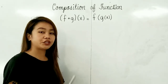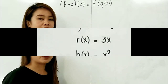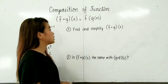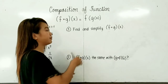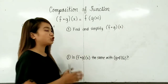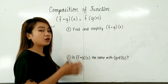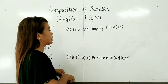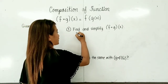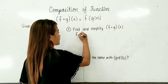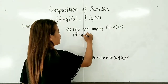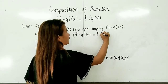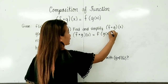Let's have examples for you to understand better. Question number one: find and simplify f composed of g of x. To solve for the composite function of f composed of g of x, first, we write f composed of g of x is equal to f of g of x.